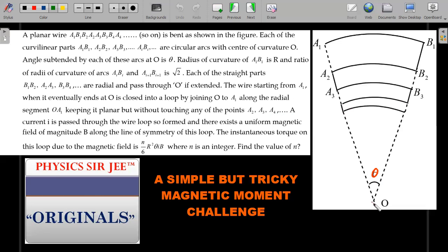The wire starting from A₁, when it eventually ends at O, is closed into a loop by joining O to A₁ along the radial segment OA₁, keeping it planar but without touching any of the points A₂, A₃, A₄ and so on. There exists a uniform magnetic field B along the line of symmetry of this loop.